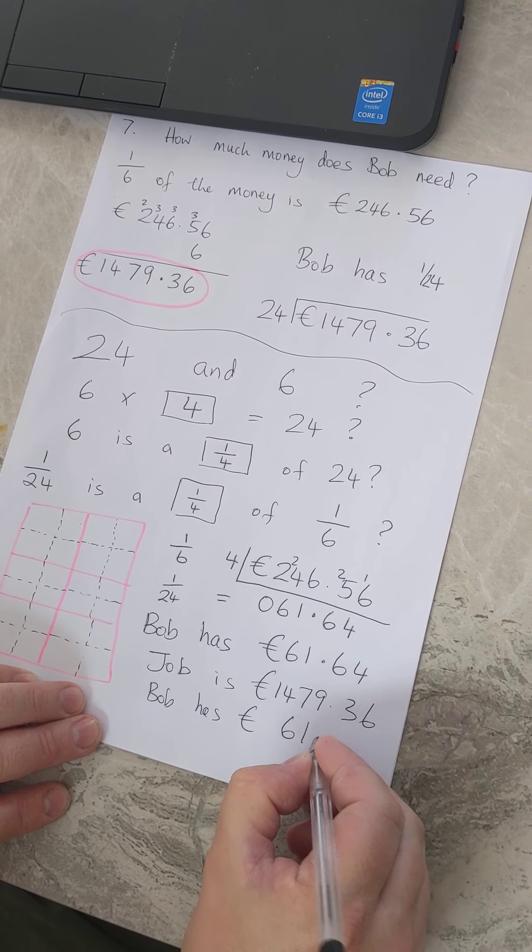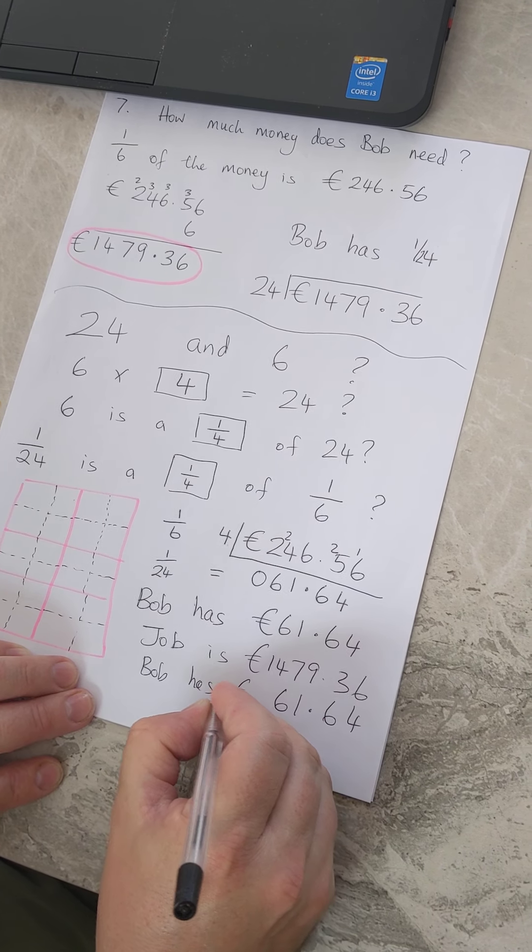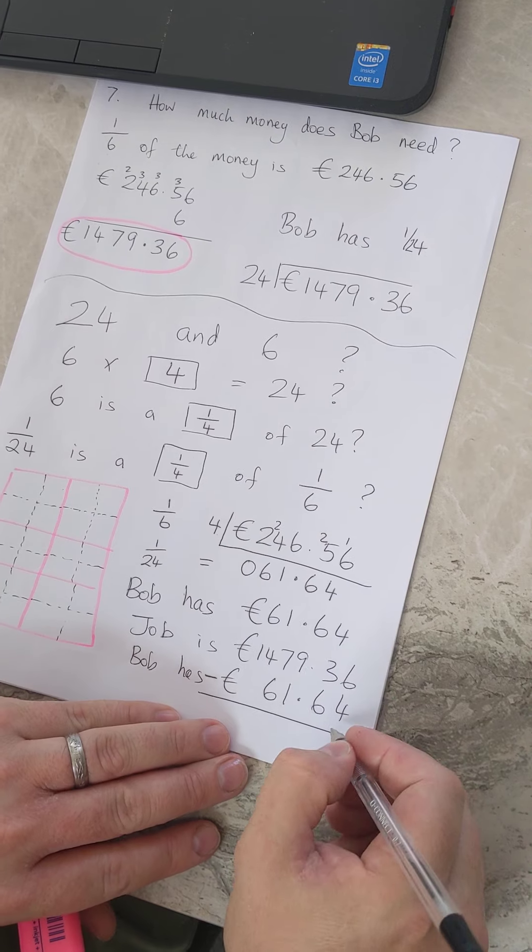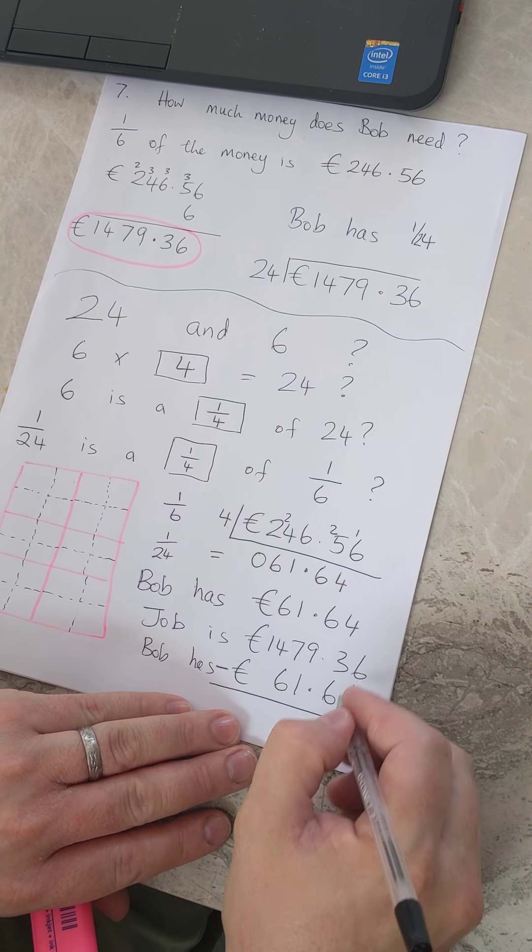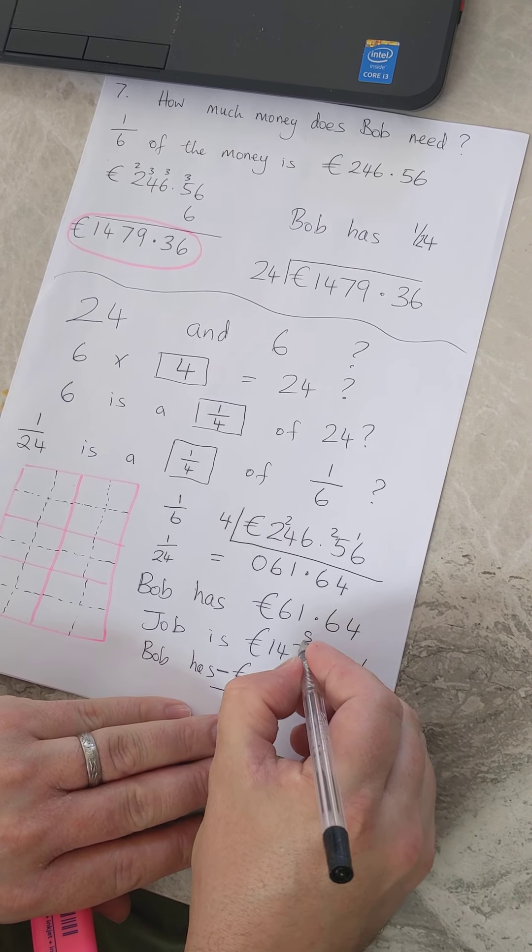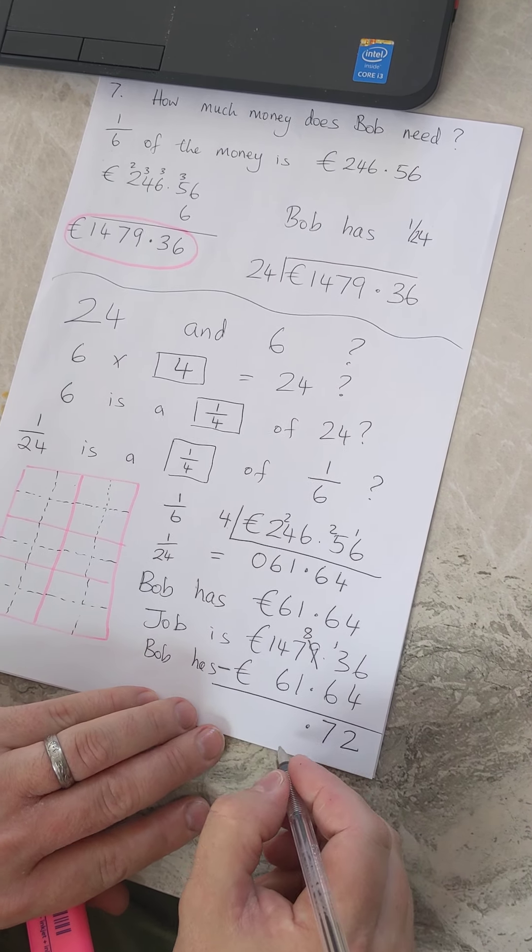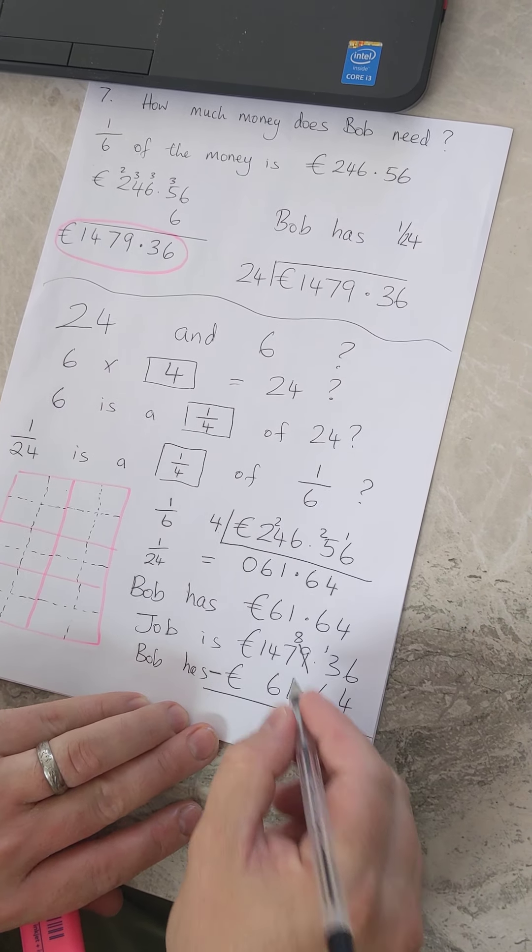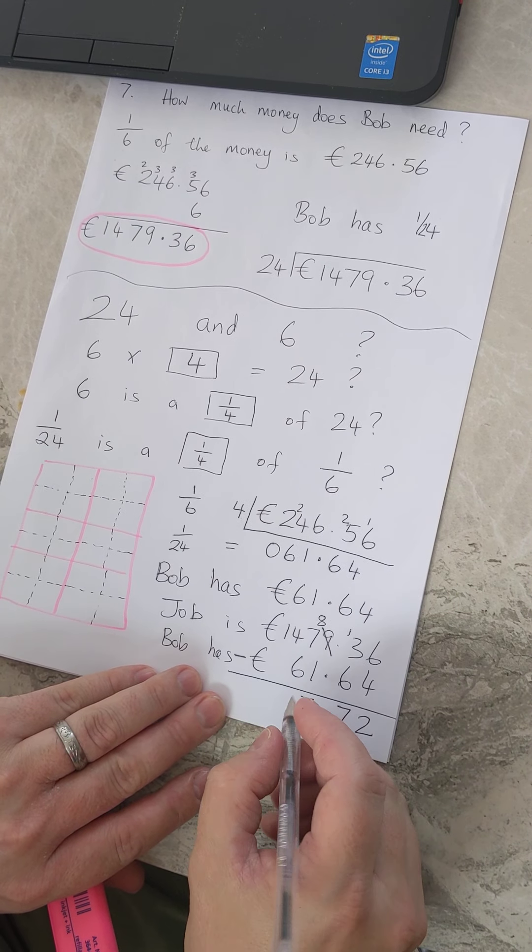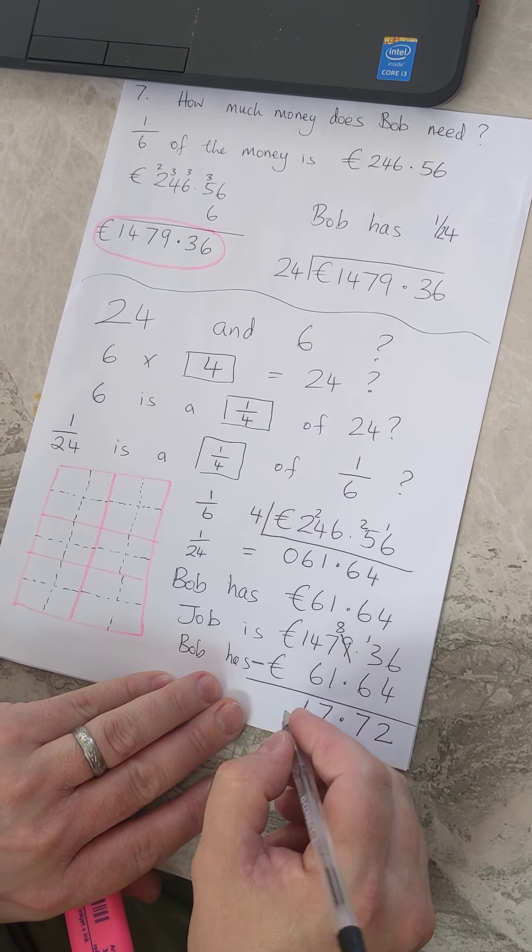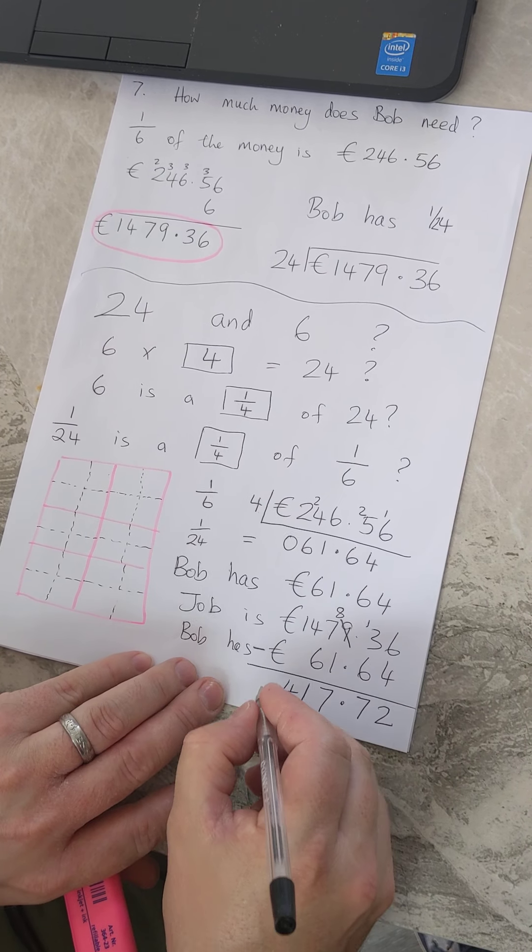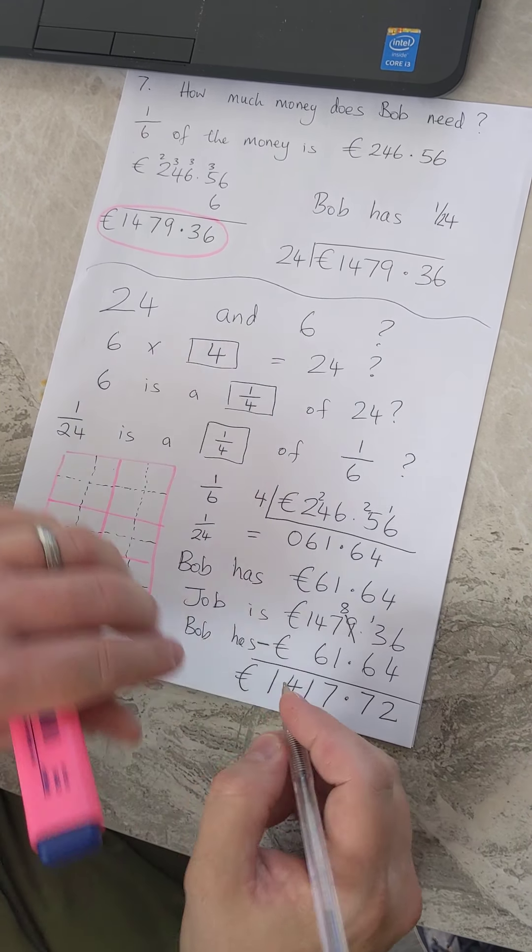Six take away four is two. Three take away six I cannot do, thirteen take away six is seven. Eight take away one is seven. Seven take away six is one. Four take away zero is four. One take away zero is one. So our answer is 1417.72.